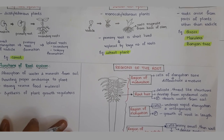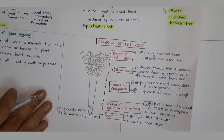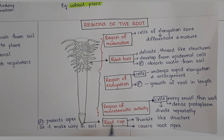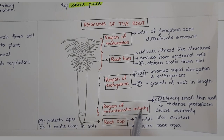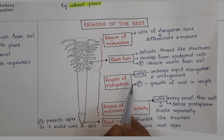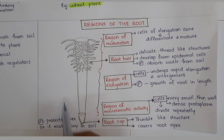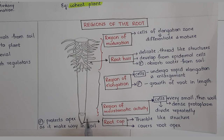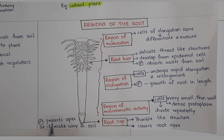Next we will deal with the regions of the root. We have primarily four regions: root cap, region of meristematic activity, region of elongation, and region of maturation. You can see these parts clearly in the diagram. The root cap is a thimble-like structure that covers the root apex. Its function is protection — it protects the apex as the root makes its way through the soil during growth.